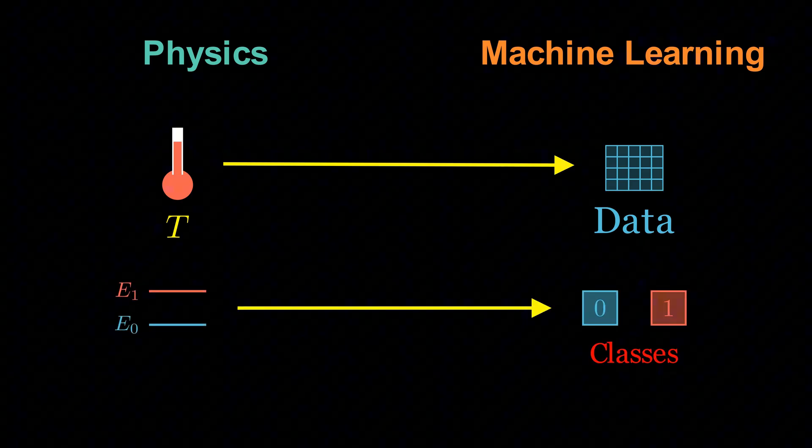What was temperature in the physical world becomes the data set in machine learning. The environment that determines how the model's parameters adapt. And what was energy in physics becomes the classes in machine learning.